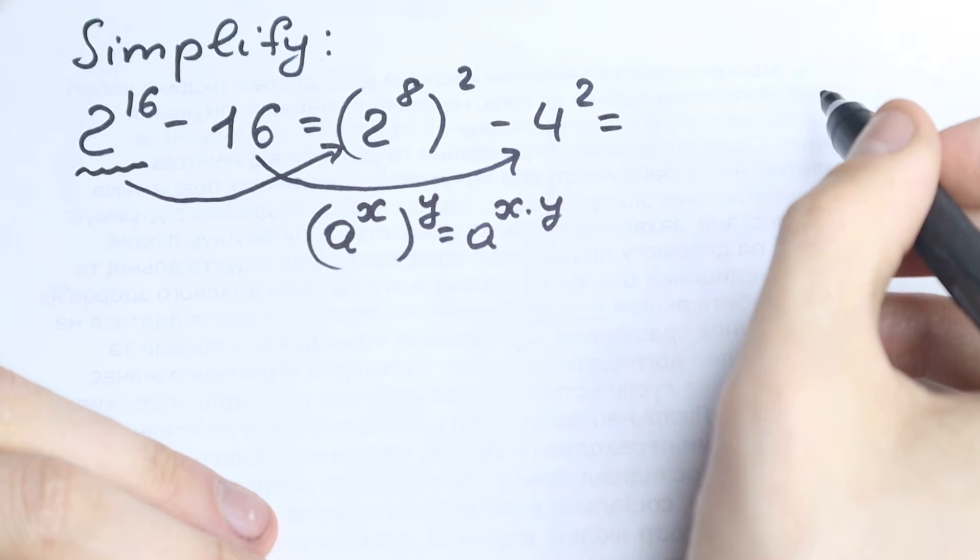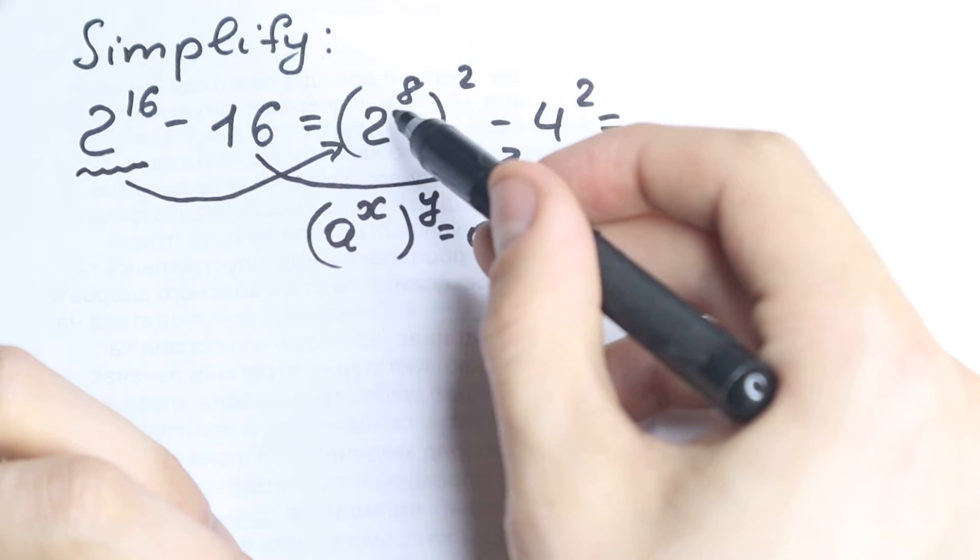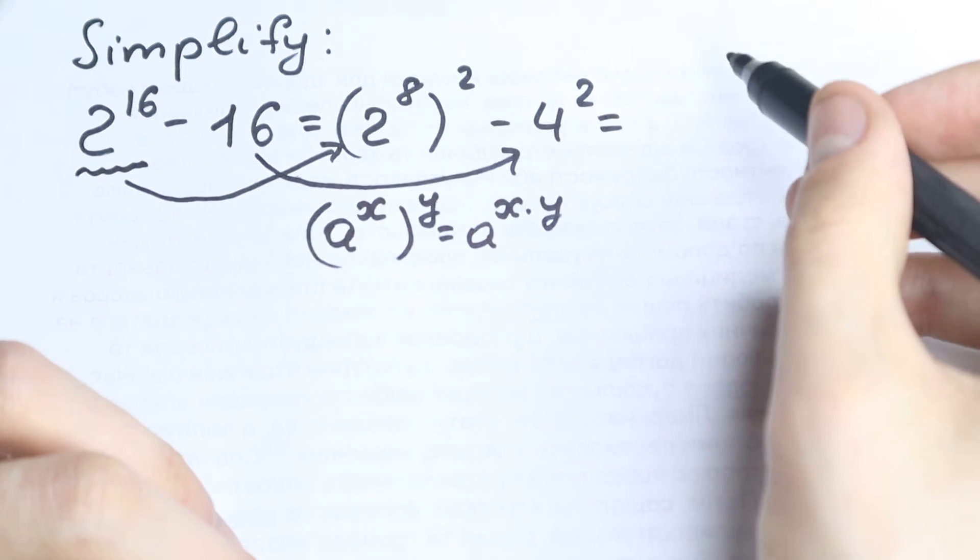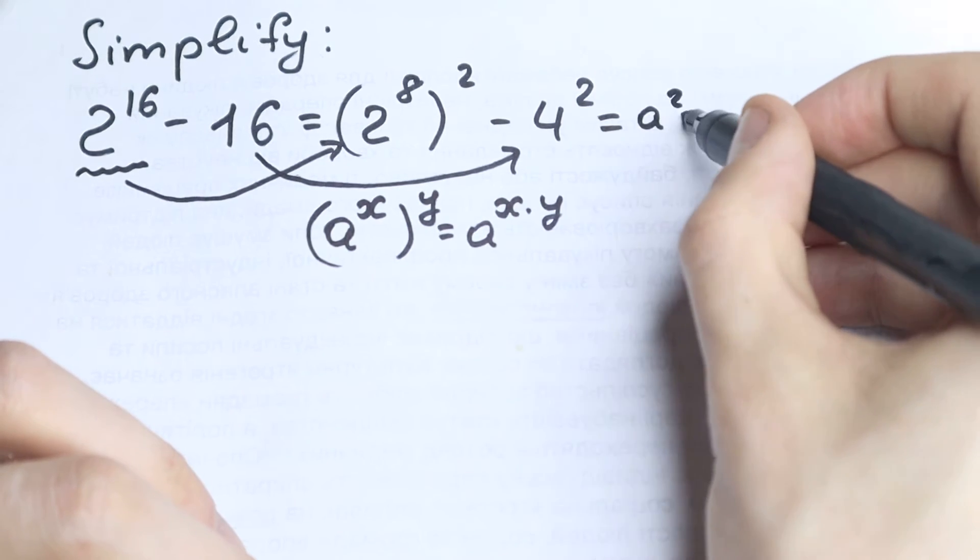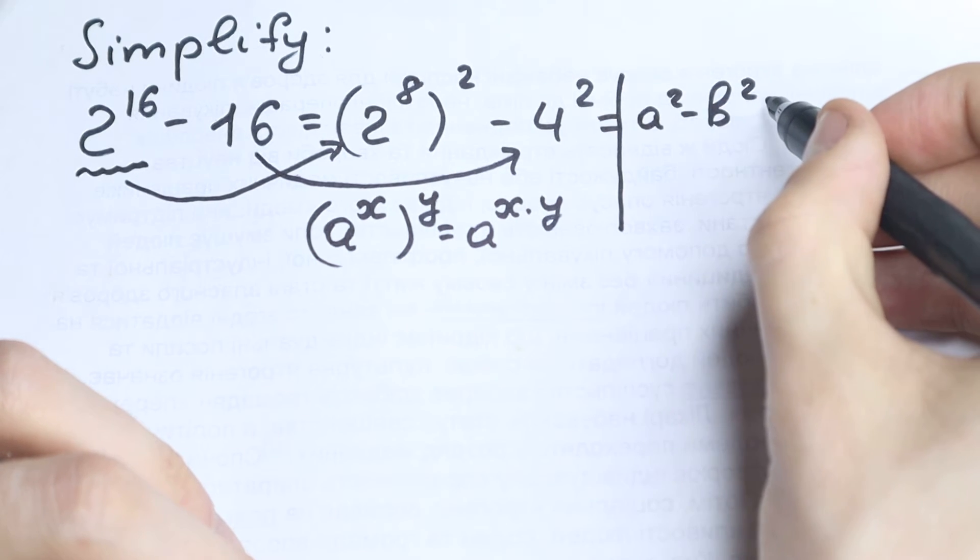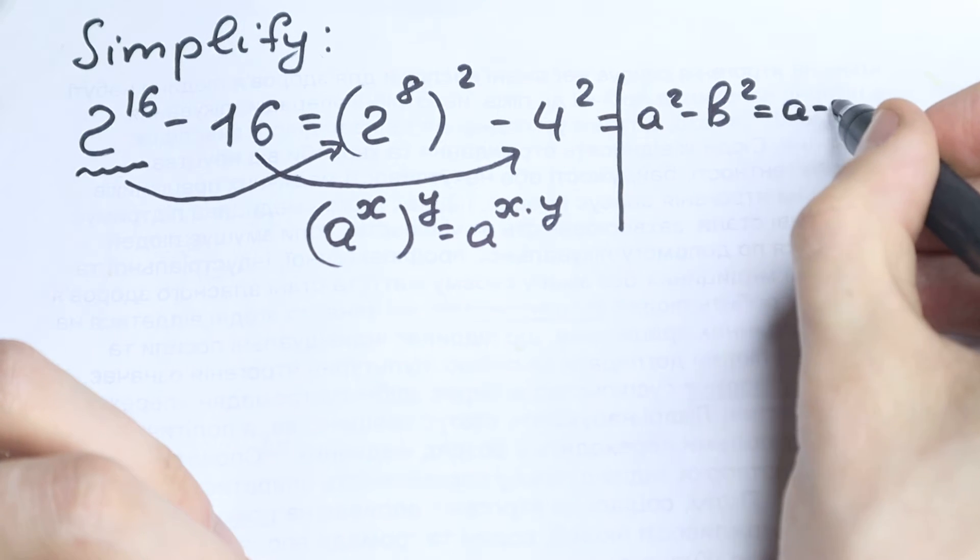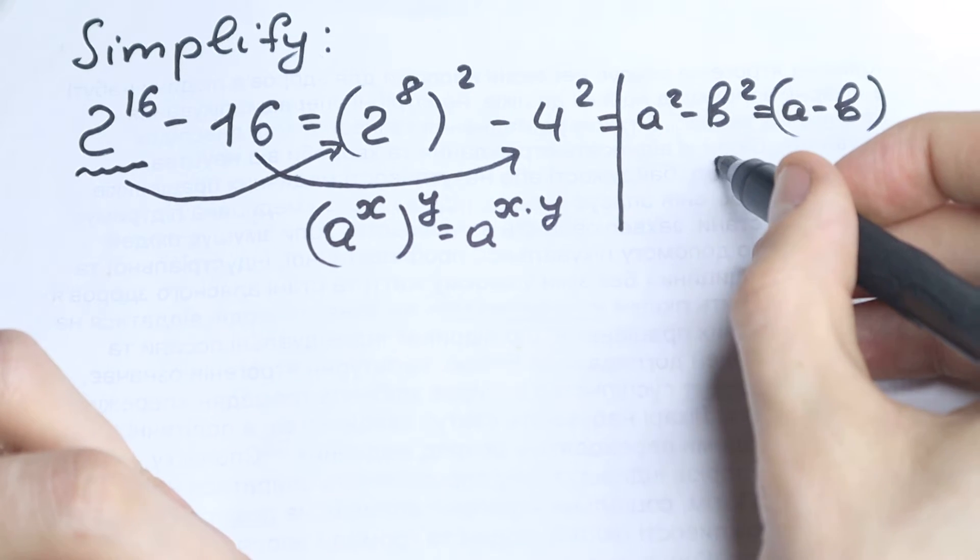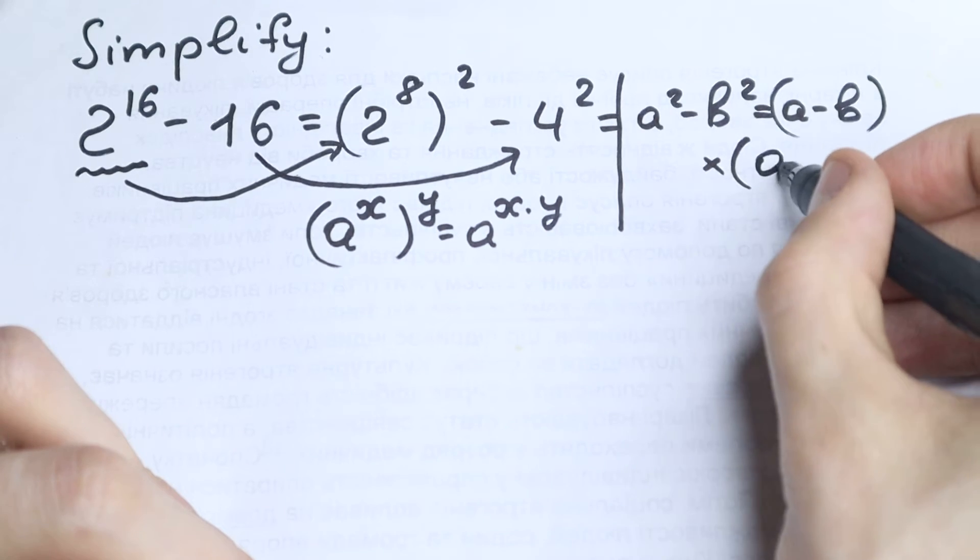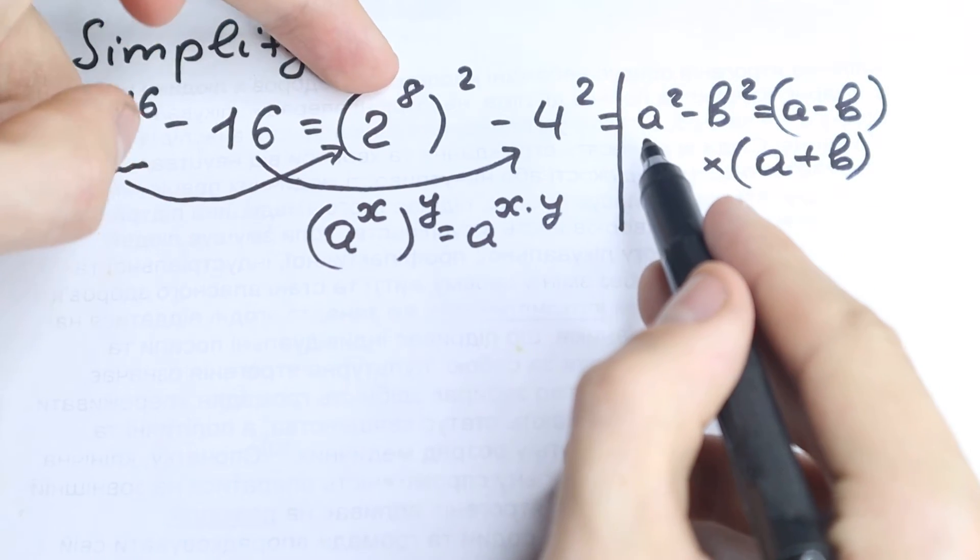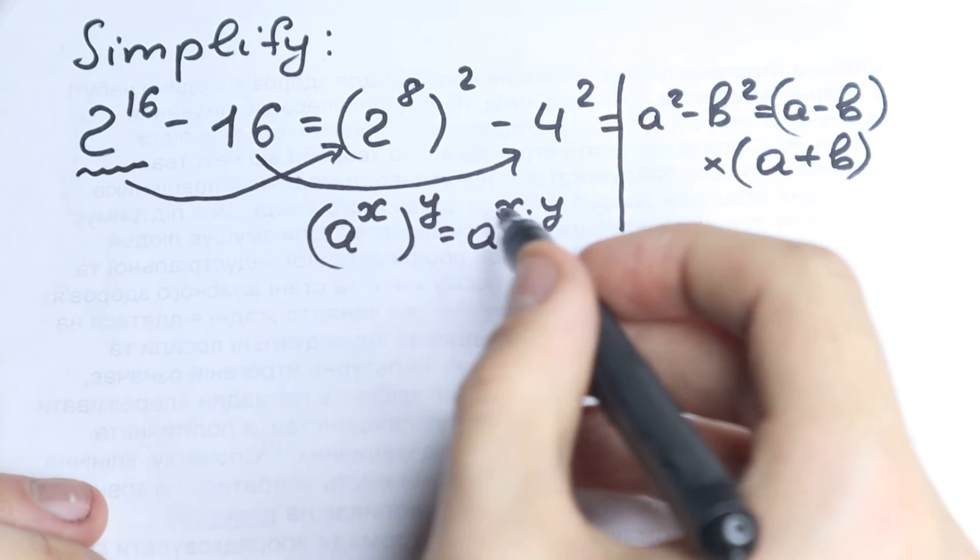Let's try to look at it in perspective of a formula. We have a to the power square and b to the power square. So we need to know about the formula: a square minus b square equals a minus b times a plus b. Let's apply this formula. We have a square minus b square, a minus b times a plus b.